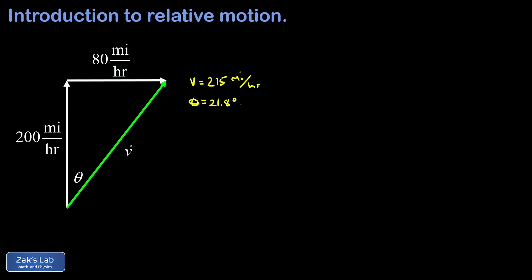To compute relative velocities we simply add velocity vectors, but it's really important to get the order right. I'm going to introduce a useful notation here. The velocity of the plane with respect to the ground — that's how you read this notation — uses a plane-slash-ground subscript.